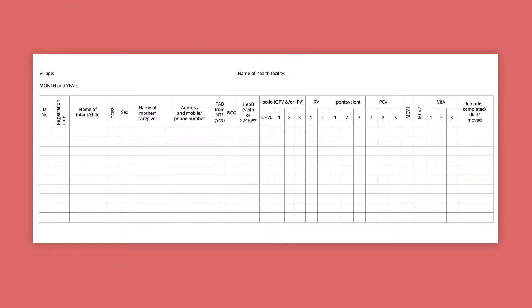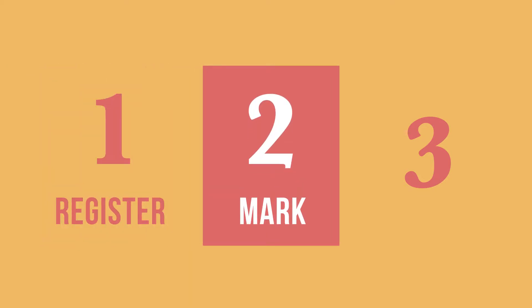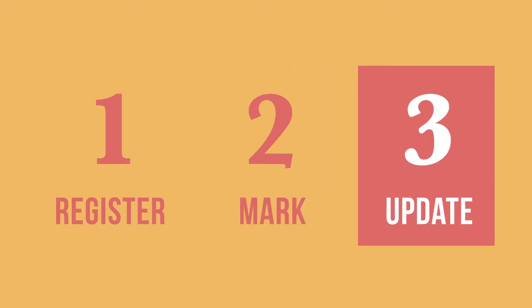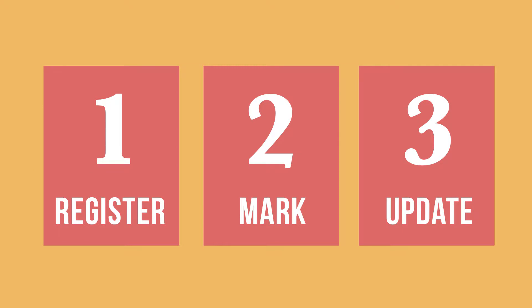Here is one example of an immunization register. There are three basic steps for recording data in an immunization register. First, register any new infants. Mark the date of new vaccinations. Finally, update their entry on future visits. You will follow these steps every time you hold an immunization session.